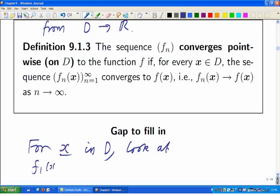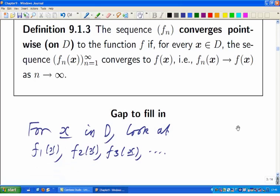So, you look at x in D, you take a particular x in D, you look at this sequence, f1 of x, f2 of x, f3 of x, that's a sequence of real numbers. And you ask, does it converge to f of x?